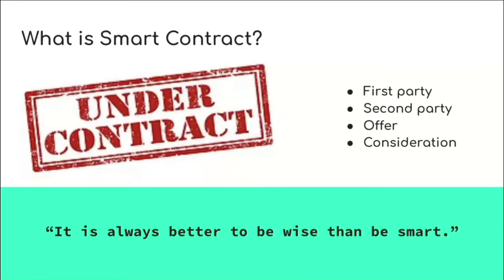The smart contract term was only coined after Ethereum started, because Ethereum basically is just like a distributed computer where you can code almost anything and make any logic out of it. The smart contract is basically just a bunch of code that is going to say what is going to happen if these criteria are being met.